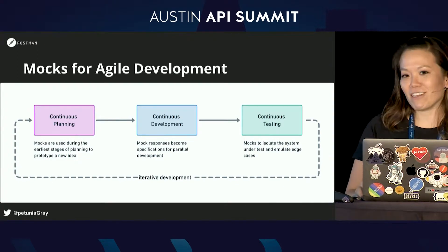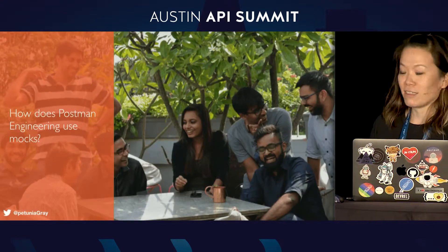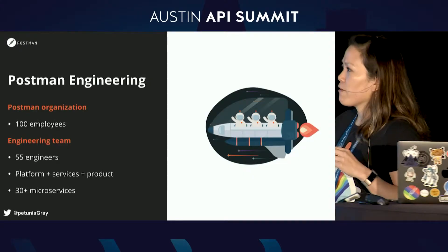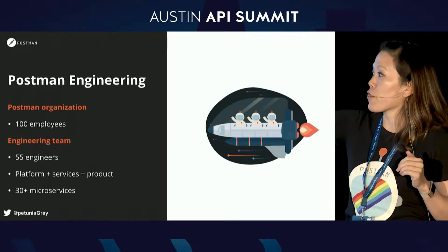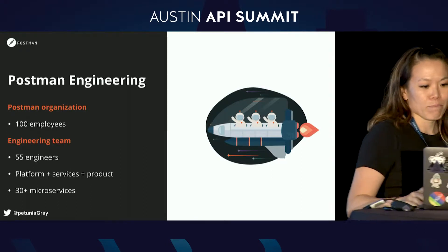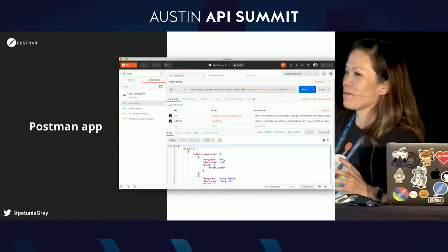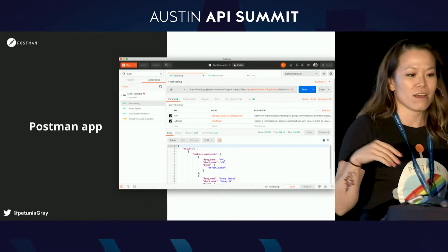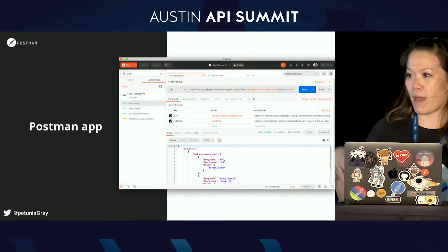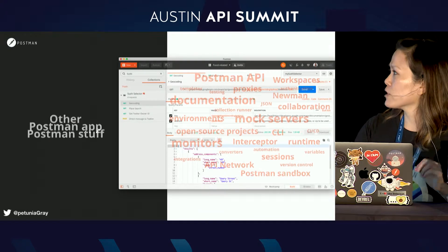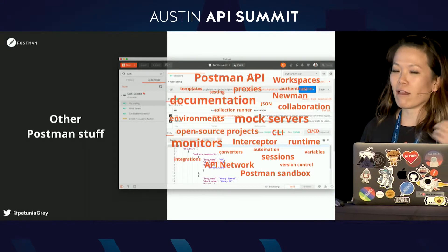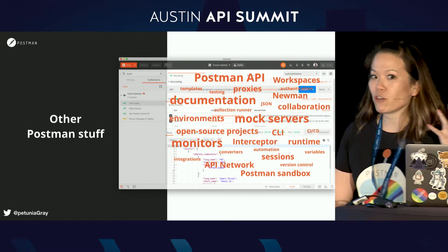Let's take a look at how Postman Engineering uses mocks. The Postman Engineering team is about 55 engineers separated into responsibilities for platform, about 30-plus microservices, and product. The product team releases the Postman app — for Mac, Windows, and Linux — in production and a Canary version. But there's a bunch of other stuff too, all enabled by a graph of internal microservices.